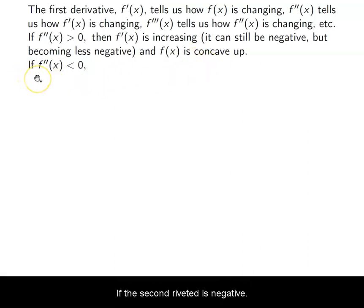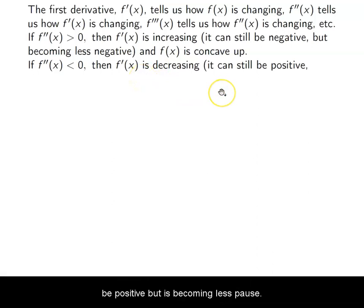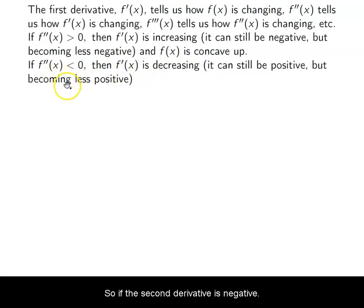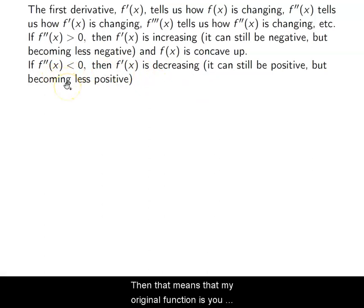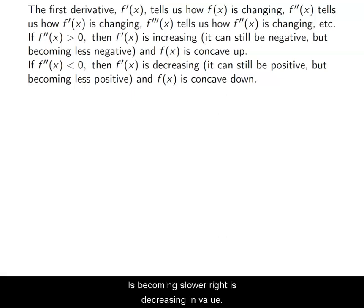If the second derivative is negative, then my first derivative is decreasing — it can still be positive, but it's becoming less positive. So if the second derivative is negative, then my original function is concave down. The rate of change for my function is becoming slower — it's decreasing in value.